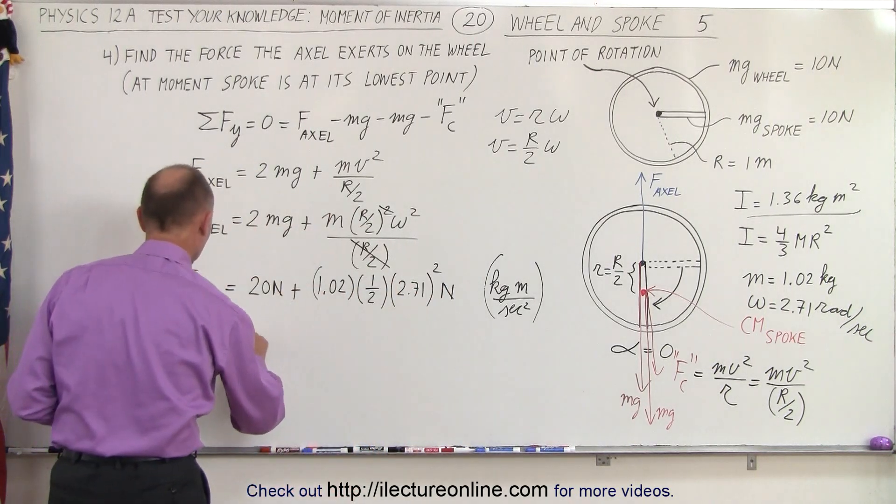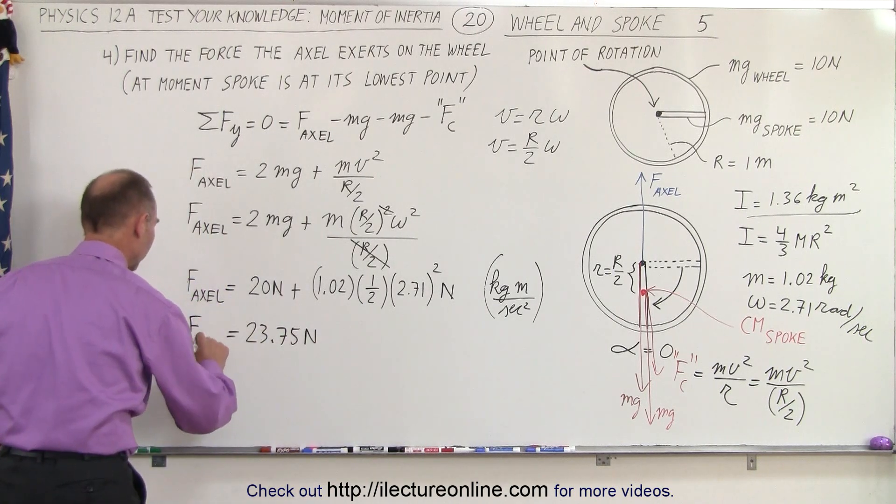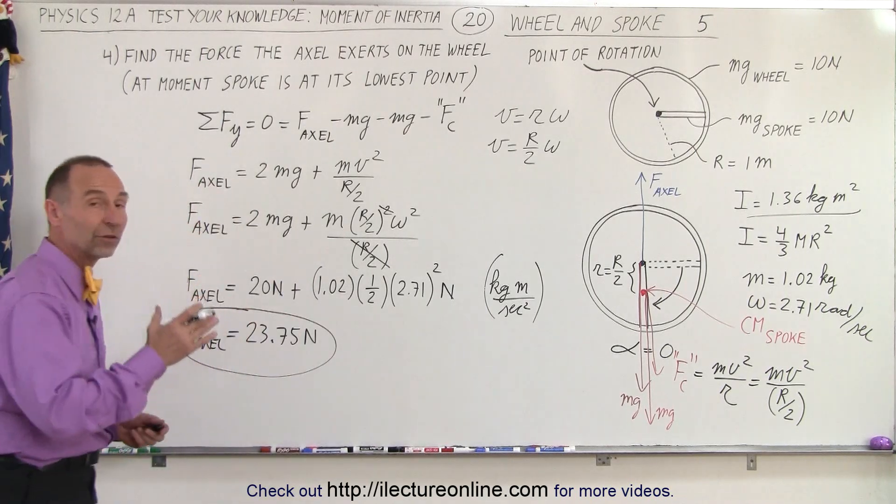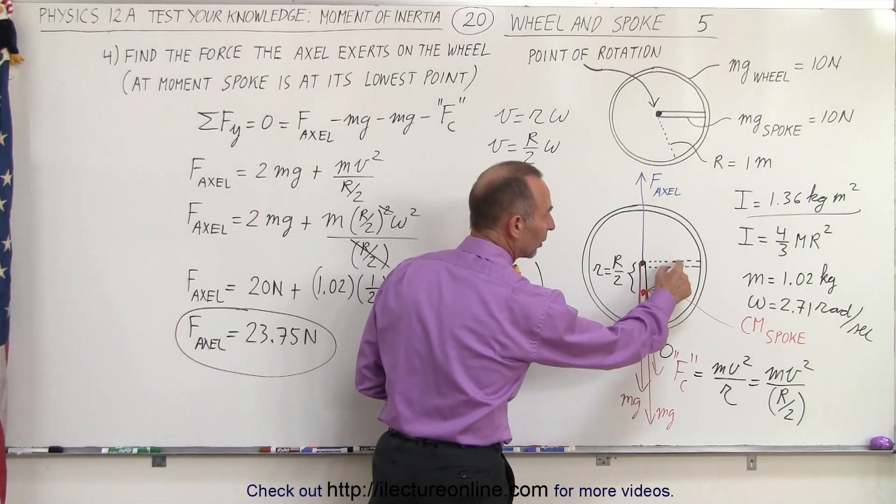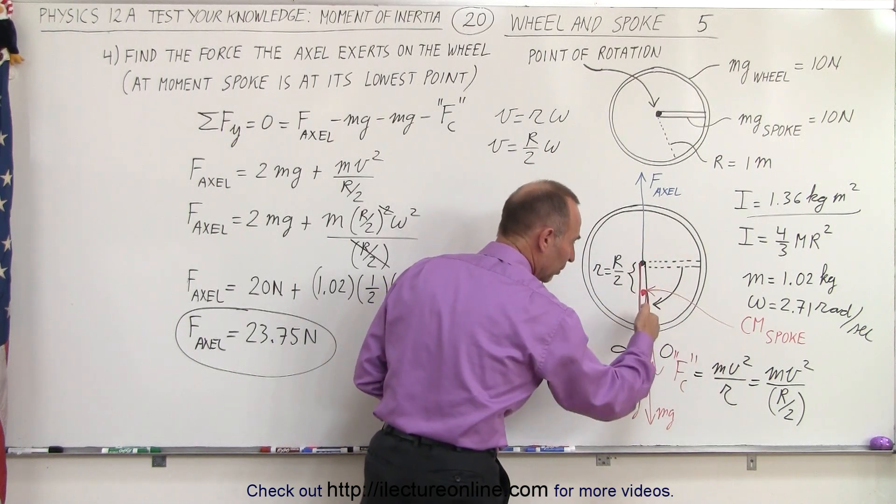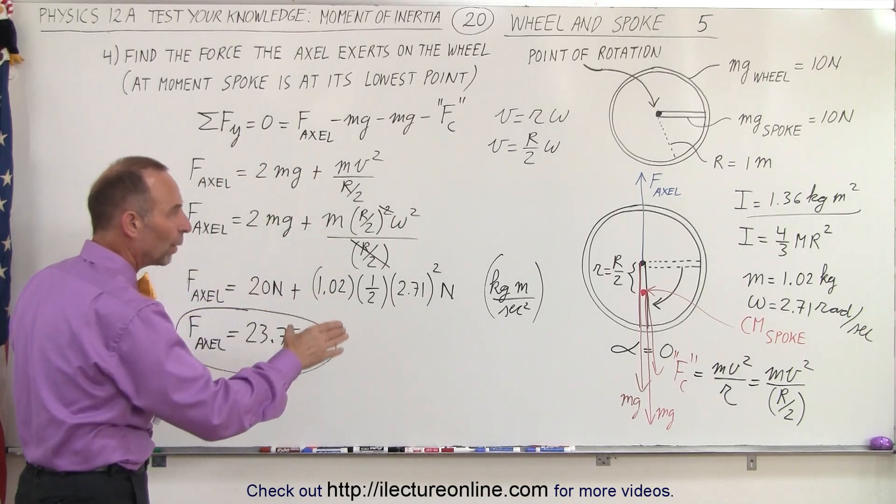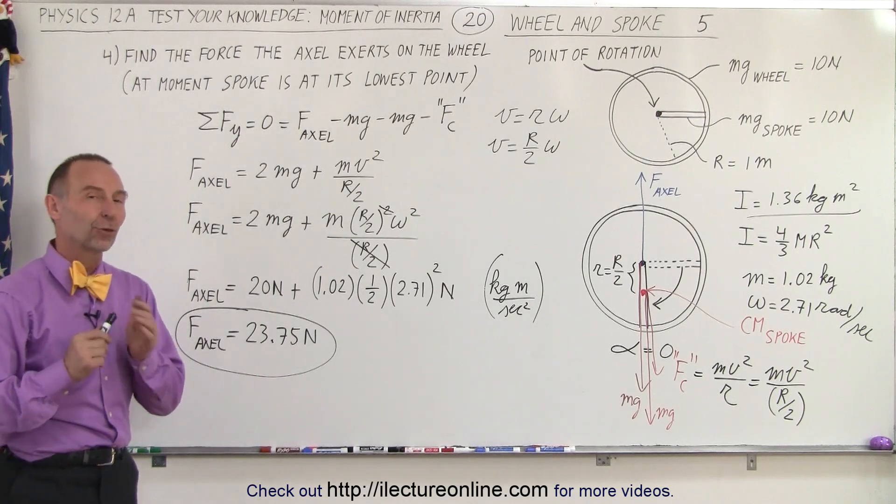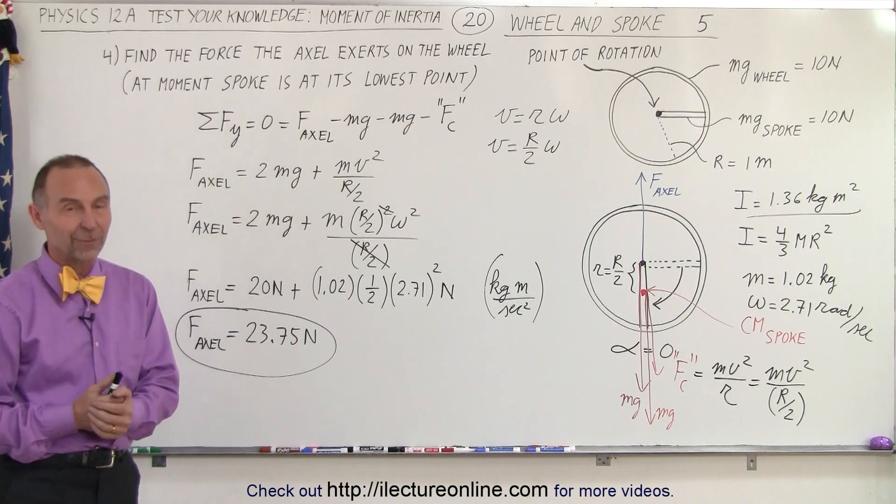That's 23.75 newtons, which is the force the axle exerts on the wheel and the spoke when the spoke is all the way down. So instead of having a force that's less than 20 newtons when the spoke is over here, because the spoke is accelerating downward, here we have the effect of the centripetal force adding additional force required for the axle to hold back both the weight and the centripetal motion of the spoke. And that's how we find the total force that the axle exerts on the wheel and the spoke. And that is how it's done.